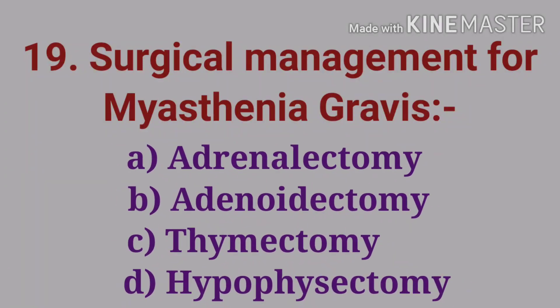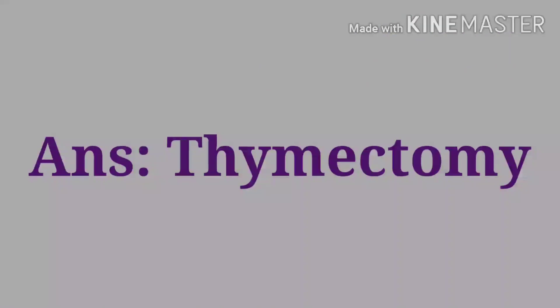The nineteenth question: surgical management for Myasthenia gravis — options are adrenalectomy, adenoidectomy, thymectomy, and hypophysectomy. The answer is thymectomy. A benign tumour of the thymus after puberty is considered an etiology for Myasthenia gravis, so thymectomy is the surgical management for Myasthenia gravis.